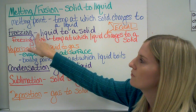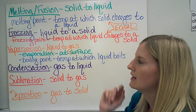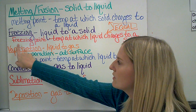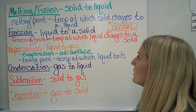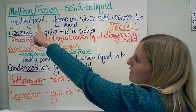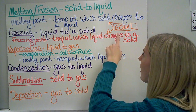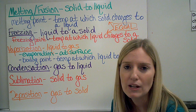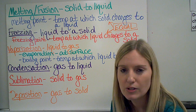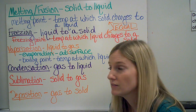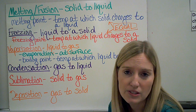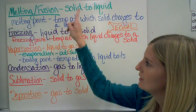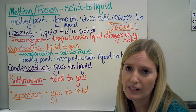When something freezes, it's doing the opposite — going from a liquid to a solid, and the temperature at which that happens is called the object's freezing point. Notice that the freezing point and the melting point for a substance are equal. Which means that for water, for example, the melting point is zero degrees Celsius and the freezing point is also zero degrees Celsius. It just depends on whether you're starting as a solid or as a liquid.